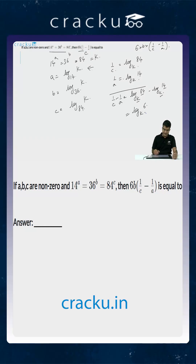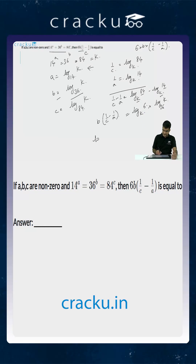Now, if you multiply this with B — that is, B times (1/C minus 1/A) — you have to multiply log of 6 to the base K by B, which equals log K to the base 36. Using change of base, log 6 to the base K equals log 6 divided by log K, times log K divided by log 36. You can cancel log K in the numerator and denominator, so this becomes equal to log of 6 divided by log of 36.